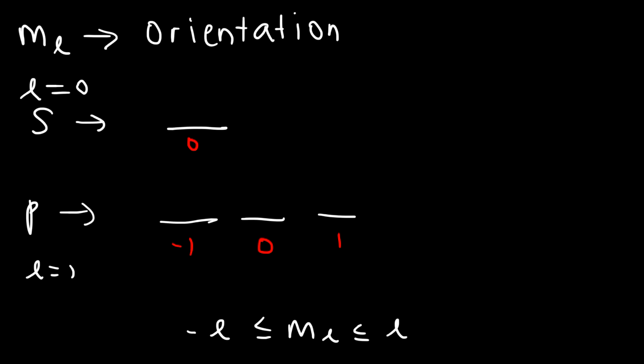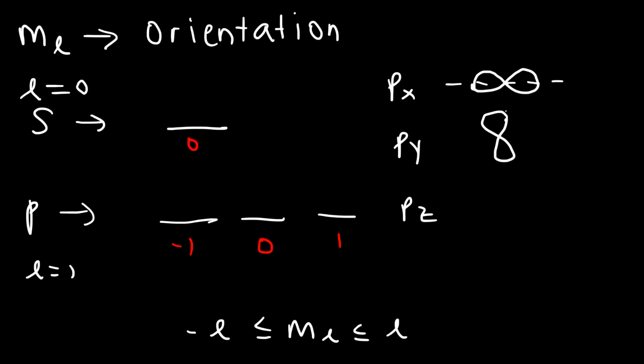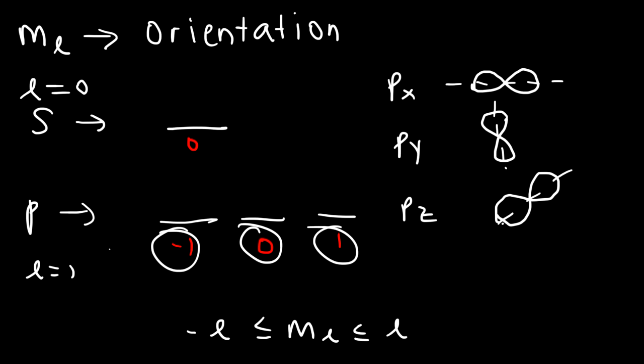The p sublevel has three orbitals: px, py, and pz. px is along the x-axis, py is along the y-axis, and pz is along the z-axis. These three orbitals within the p sublevel have different orientations, so one of the m L values corresponds to px, one to py, and one to pz — though it doesn't have to be in that order.